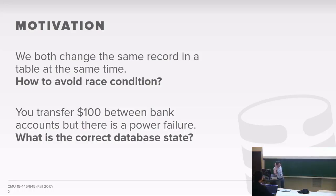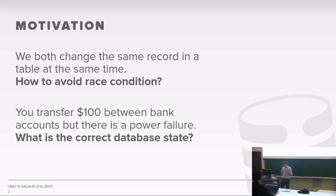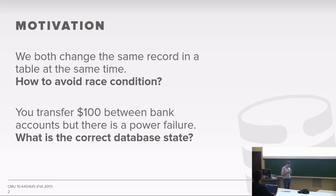To motivate what we're going to talk about today, I want to propose two simple scenarios. The first one is that you and I execute a query at the same time on the same database, at the exact same moment, and we want to access the same record and modify it at the same time. The question is: what should actually happen here? How do we avoid one write incorrectly overriding another write, or seeing half of our update — if I update ten attributes and you update the same ten, we don't want to see my five and your five mixed.